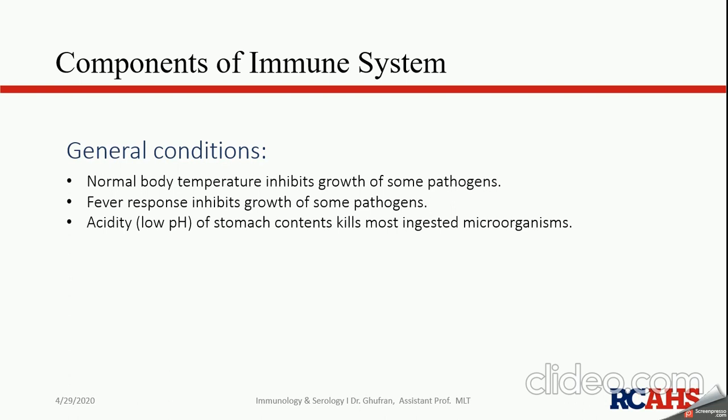For example, consider Bacillus anthracis — it grows well at 37 degrees Celsius. Chickens have a body temperature of around 39 to 40 degrees Celsius, which makes them naturally immune to Bacillus anthracis because that bacterium cannot grow at that higher temperature. This is a type of defense mechanism that falls under the physiologic barrier.